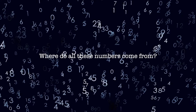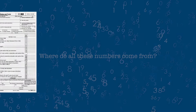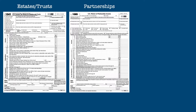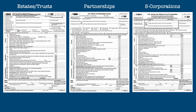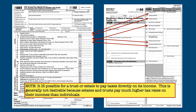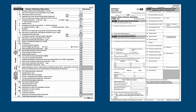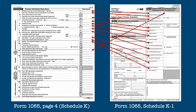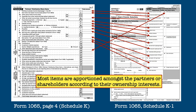So where do all these numbers come from? To report their income and deductions, estates and trusts file Form 1041, partnerships file Form 1065, and S-corporations file Form 1120-S. Schedule K-1 for Form 1041 takes its figures directly from the front page of the return, apportioned among the beneficiaries according to the will or trust agreement. Partnership and S-corporation returns both have a Schedule K as part of the return. Schedule K breaks down the income, deductions, and credits of that entity to categories that match those on that entity's K-1, and most of these items are then apportioned amongst the partners or shareholders according to their ownership interests.